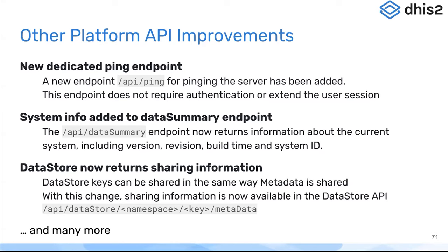The first of these is a dedicated ping endpoint. This is useful for checking if a service is available, if DHIS2 is available. You can use this ping endpoint without requiring authentication. It doesn't extend the user session. The DHIS2 application platform uses this automatically to detect if the user is connected to the DHIS2 server, but it doesn't extend the user session if they send that ping, so you can send it as many times as you want without worrying about the security implications.